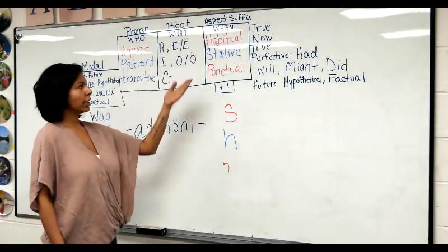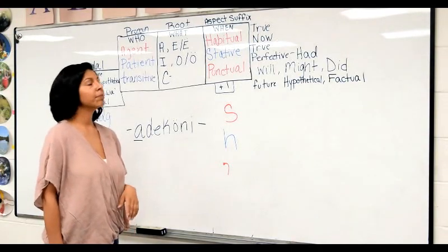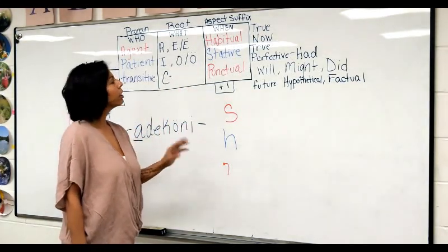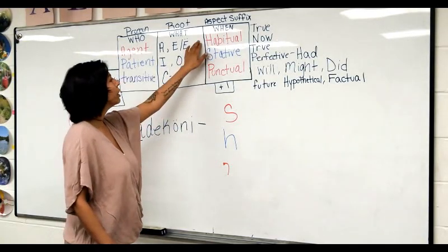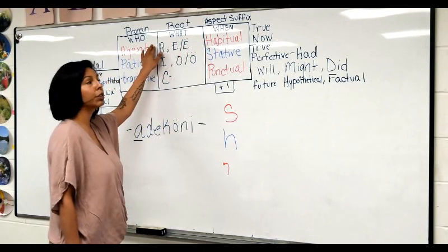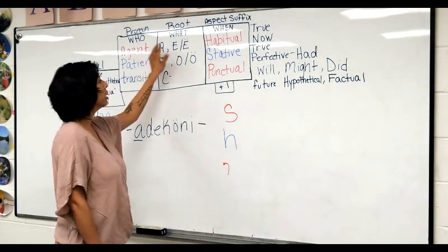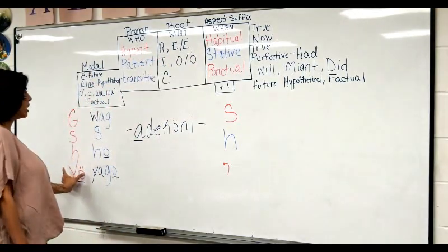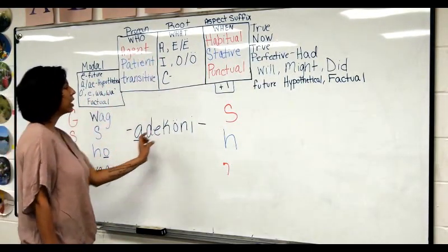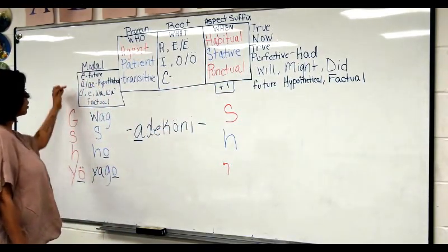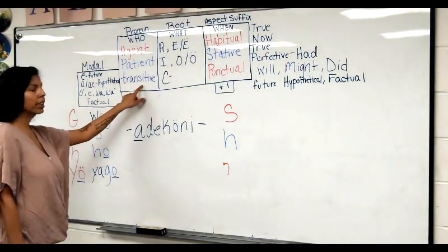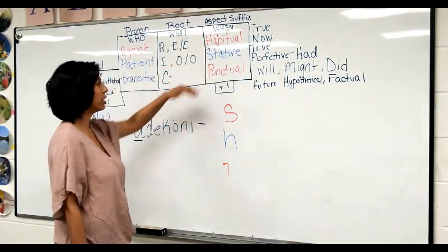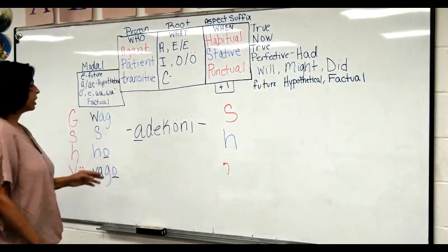I just want to focus on the basic understanding of how this word is going to flow. Now there's a reason I color-coded this: a habitual will use an agent pronoun — which means red — and you'll see what I'm talking about when you look at that pronoun chart. A stative will use a patient pronoun. So my habitual will use these red agents, my stative will be using these blue patients, and a punctual will also use the agents along with the modal coming in front. A transitive can be matched up with any one of these.